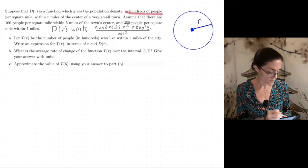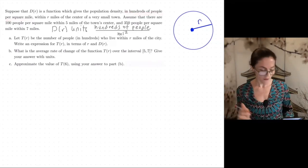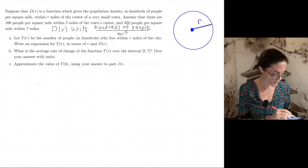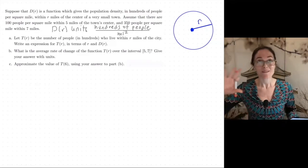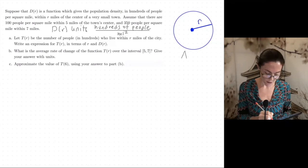and then per miles squared. Okay, this is what it reads. Right here, hundreds of people per square mile. And then if we think about this circular being within r miles, the area here is pi r squared, and its units are r squared.